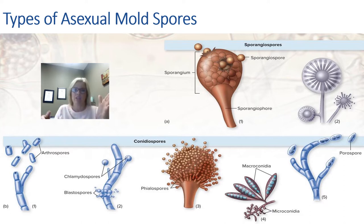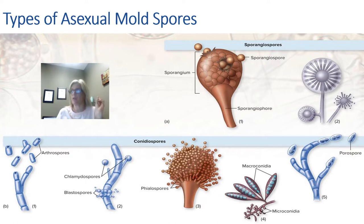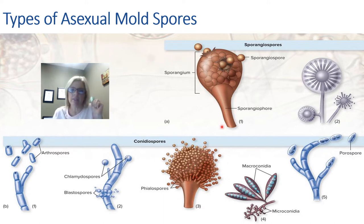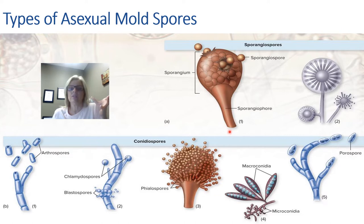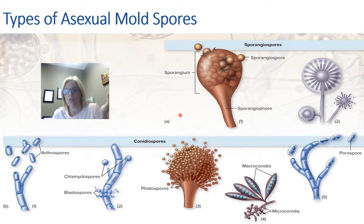We have two types of asexual spores: sporangiospores and conidia spores. Sporangiospores are formed by successive cleavages within a sack-like head called a sporangium — you can see that enclosed sack attached to a stalk. Conidia spores don't have a sack; they have free spores not enclosed in a sack. That's the biggest difference.